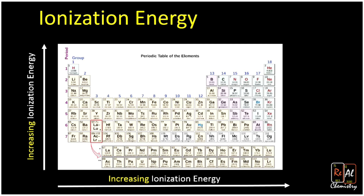For ionization energy, it gets harder to remove an electron as we go up and as we go to the right. For example, hydrogen has one electron pretty close to its nucleus because hydrogen is small, so it takes more energy to remove that electron than it does for lithium, whose electron is farther from the nucleus. Ionization energy also increases going to the right for the same reason atomic size varies left to right: as atoms get smaller, their electrons are closer to the positively charged nucleus and hence harder to remove.